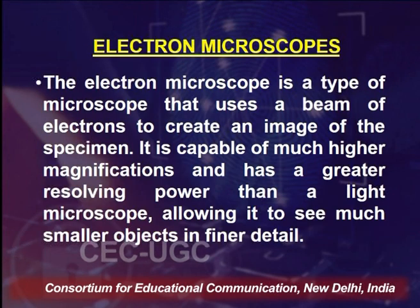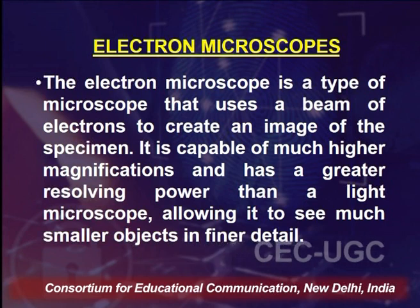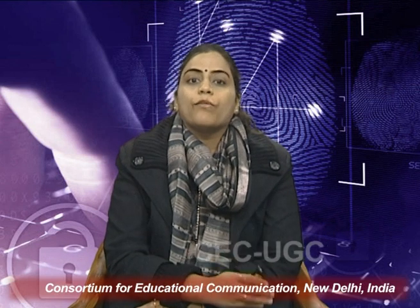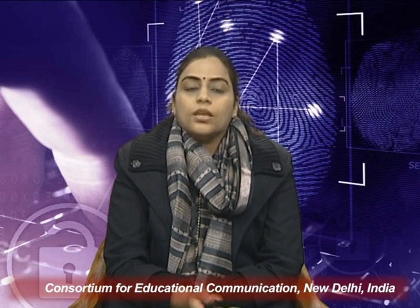Electron microscopes use a beam of electrons to create an image of the specimen. They are capable of much higher magnification and have greater resolving power than a light microscope, allowing examination of much smaller objects in finer detail. The magnification power of optical microscopes goes up to 100x, but electron microscopes can magnify to thousands of times. There are two main electron microscopes: TEM (transmission electron microscope) and SEM (scanning electron microscope).